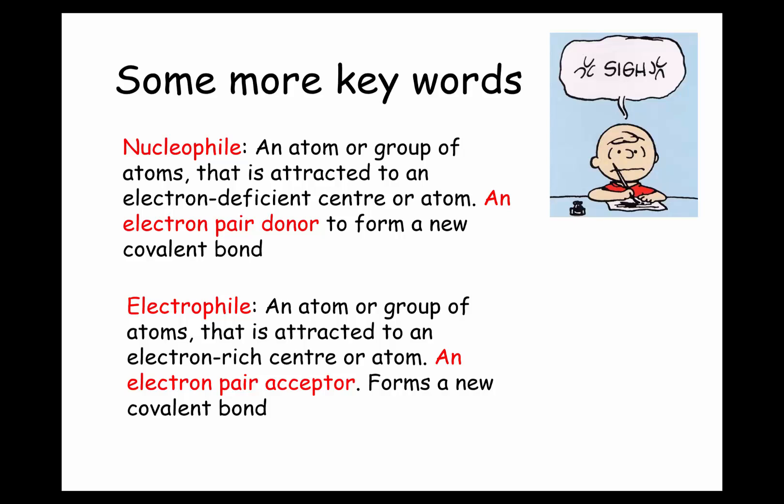The definition for electrophile is very similar. You do need to note these definitions. However, a useful way to remember them is: a nucleophile is simply an electron pair donor, and an electrophile is an electron pair acceptor. Do make sure you learn the full definition as shown in your textbooks, but as a shorthand — nucleophile is electron pair donor, electrophile is electron pair acceptor.